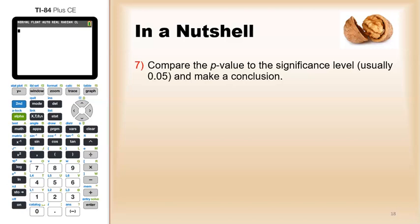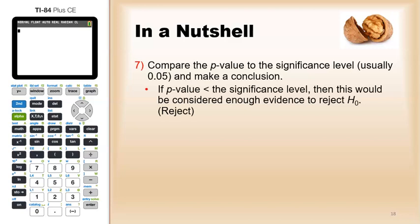From there we compare the p-value to the significance level, which that's usually 0.05, and if the problem doesn't say otherwise assume that's 0.05. Then we make a conclusion. If the p-value is less than the significance level, then we should be considered enough evidence to reject the null hypothesis.